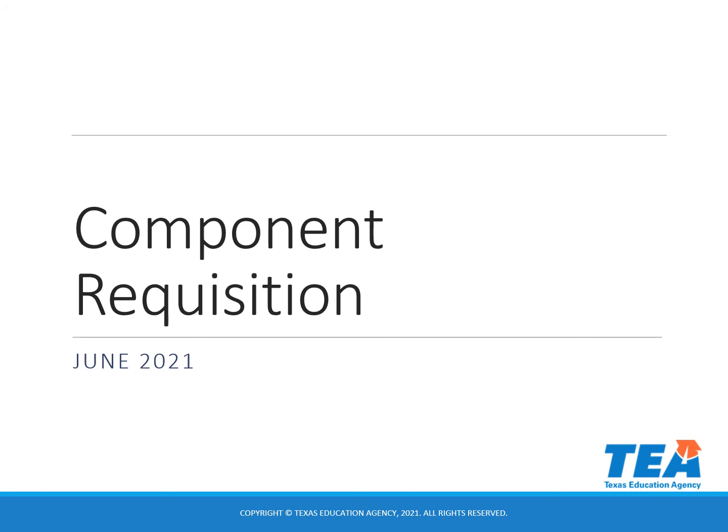Hello, my name is Janet Warren. I am with the Instructional Materials and Implementation Division at the Texas Education Agency. This presentation will show you how to use a component requisition to order individual components in the EMAT ordering system.